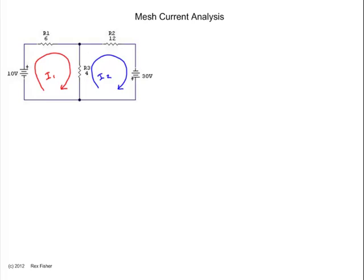The next step is to mark the electrical polarity of every component. Since we're going around this direction, and this is the current I1, current is going to flow from positive to negative through R1. It's going to flow from positive to negative through R3. And it's going to flow up through the battery.